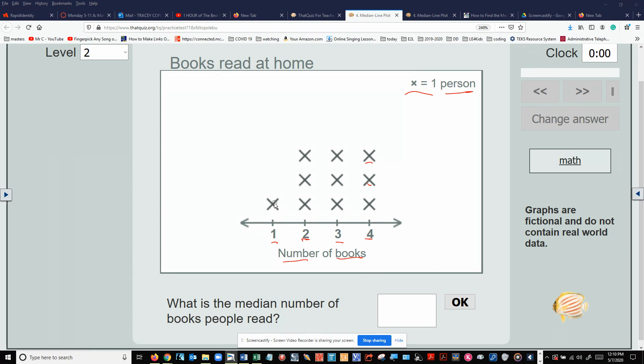Well, here I have one person, and how many did they read? One. I have a person here that read two, a person here that read two, a person here that read two. And I had these three people each read three. And I had three people that read four.